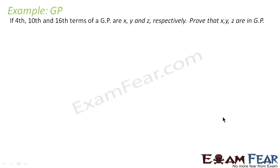Let's take one more example: the 4th, 10th, and 16th terms of a GP are x, y, and z respectively, and we have to prove that x, y, z are in GP. So let's take a GP where the terms are in this form.